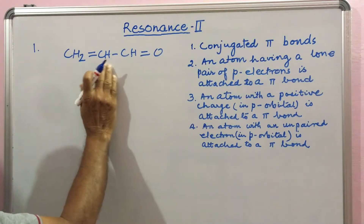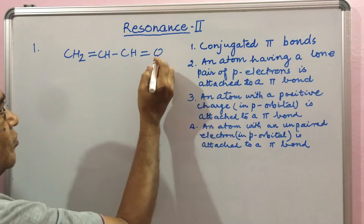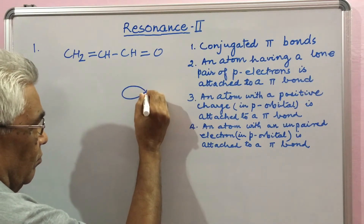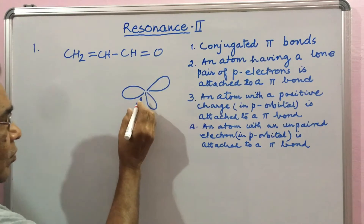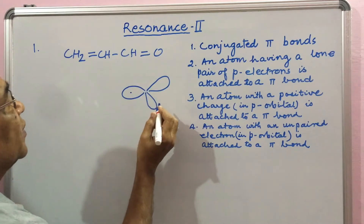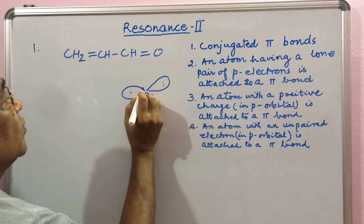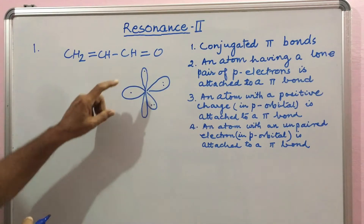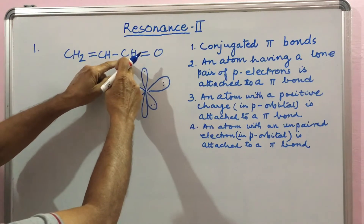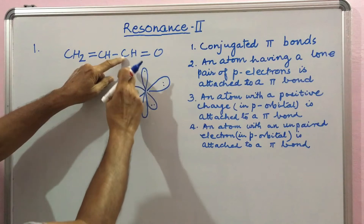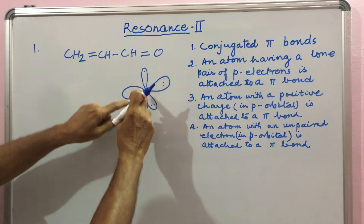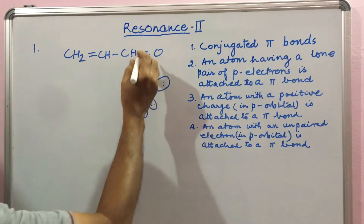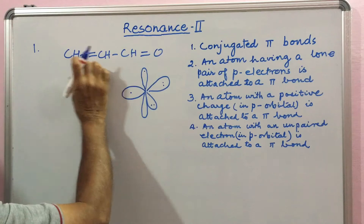Actually, there are four parallel P orbitals here. The oxygen here is Sp2 hybridized, in which the Sp2 has one electron, two here, two here, and a perpendicular P orbital stands here with one electron. All atoms are Sp2 hybridized. An overlap of two Sp2 orbitals forms a sigma bond, and a Pi bond is formed by the two P orbitals. So the condition is fulfilled — there are four parallel P orbitals.